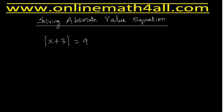Whenever we solve this kind of absolute value equation, the first thing we do is take two branches. The first branch is going to be x plus 3 is equal to positive 9, and the second branch is going to be x plus 3 is equal to negative 9.